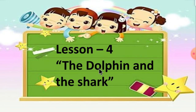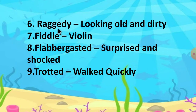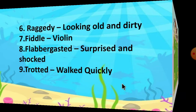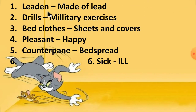Lesson 4 — The Dolphin and the Shark: Murky means 'dark and dirty'; Swamp means 'soft and wet land'; Grumpy means 'unhappy'; Duck-billed platypus means 'a sea creature'; Shuffling means 'walking slowly and noisily'; Raggedy means 'looking old and dirty'; Fiddle means 'violin'; Flabbergasted means 'surprised and shocked'; Trotted means 'walked quickly'. Poem 5 — The Land of Counterpane: Leaden means 'made of lead'; Drills means 'military exercises'; Bedclothes means 'sheets and covers'; Pleasant means 'happy'; Counterpane means 'bedspread'; Sick means 'ill'.